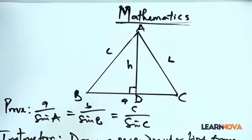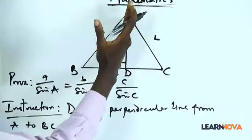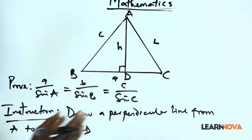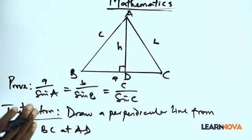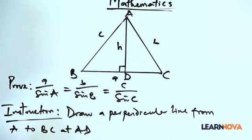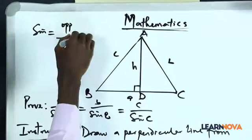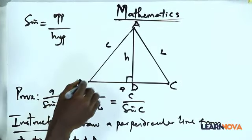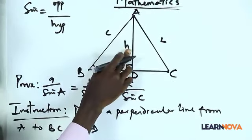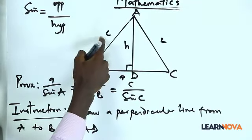Now with this, we can continue to prove. With what we've done so far, this has turned into a right angle triangle, whereby we can use our trigonometry ratios — sine, cosine, and tangent. Don't forget we are dealing with sine rule, so strictly we'll be on sine. If I want to start, I do sin B first. Sine is equal to opposite over hypotenuse. If this is angle B, my opposite of this angle is h or AD, and my hypotenuse is c. So my sine B equals h over c.